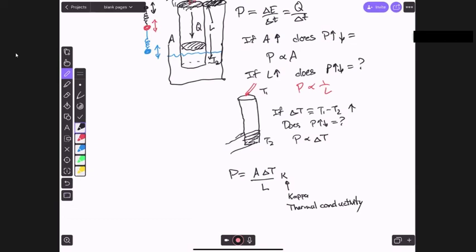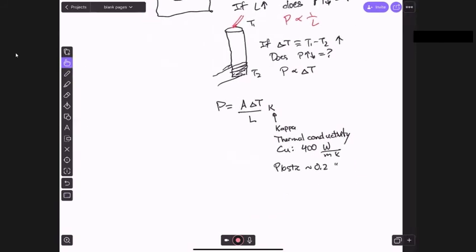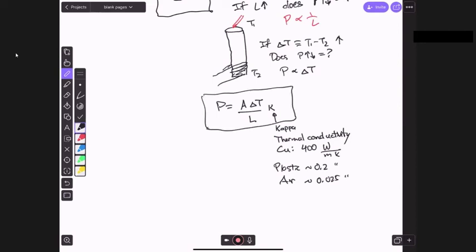Let me just give you a few numerical values. For copper, the thermal conductivity would be 400 watts per meter kelvin. For plastic, depends on the exact plastic, but it's about 0.2 of the same units. And for air, it's about 0.025 of the same units, watts per meter kelvin. So that's the power due to conduction. Questions so far?